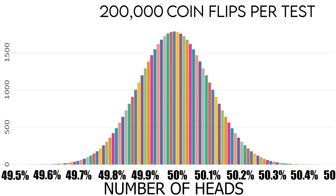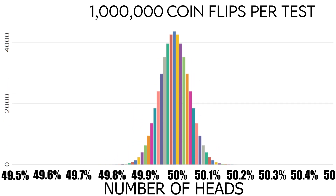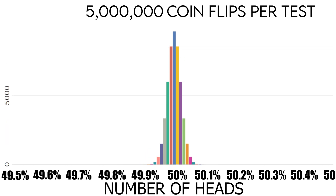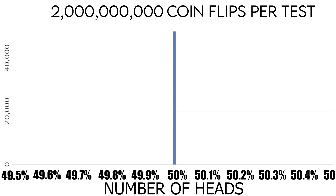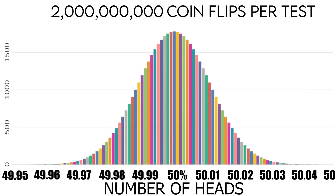We can do the same thing we did before: keep increasing the number of flips, the bell curve will keep getting more and more narrow until eventually it's right back to a vertical line again. Here we are at 2 billion flips and the results seem to be exactly 50% when we round to two decimal places. But if you zoom back in, we get right back to the same bell curve with all the tiny fluctuations — we just needed more decimal places to see what's going on.